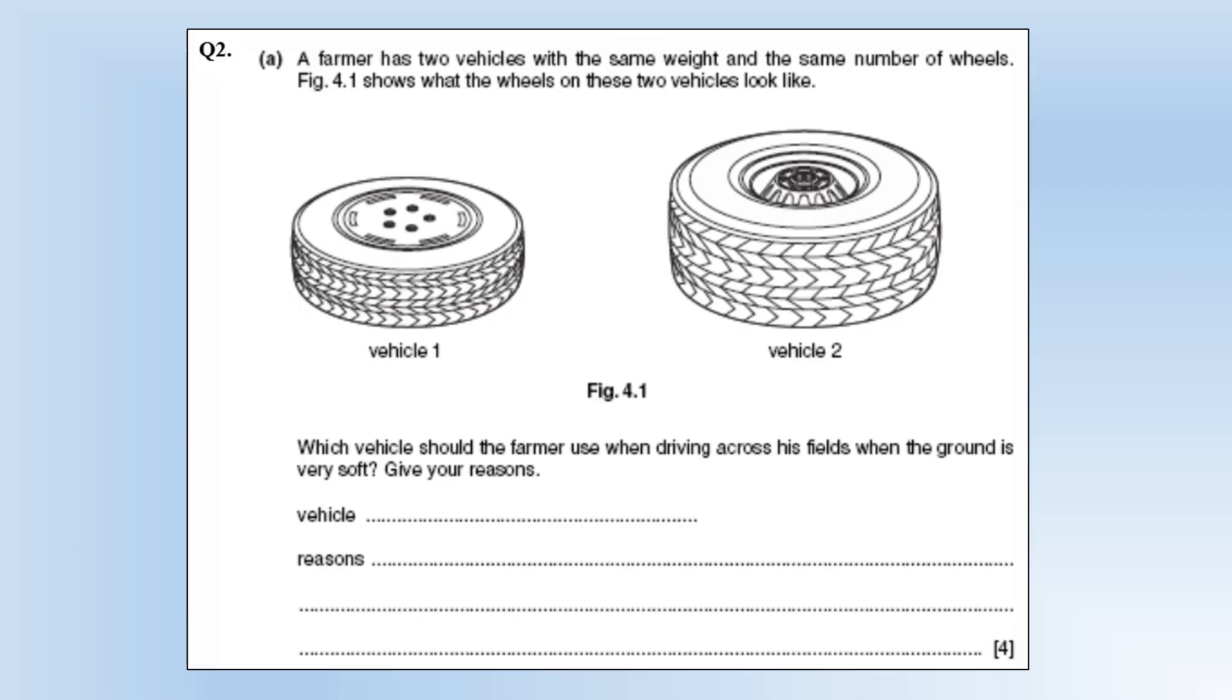A farmer has two vehicles with the same weight and the same number of wheels. The diagram shows what the wheels of the two vehicles look like. So basically we've got one which is a lot wider than the other and so it's going to have a lot larger surface area. Which one should the farmer use when driving across fields when the ground is very soft give reasons?